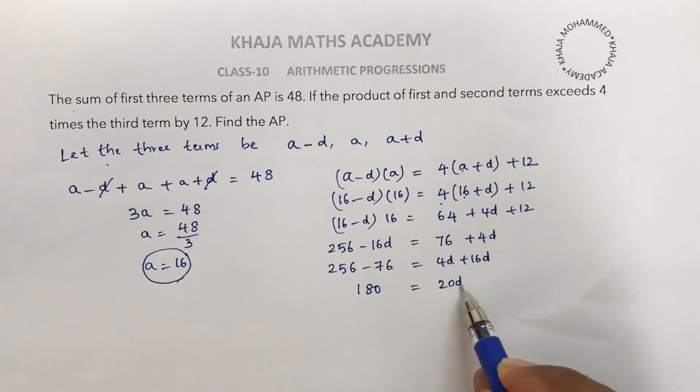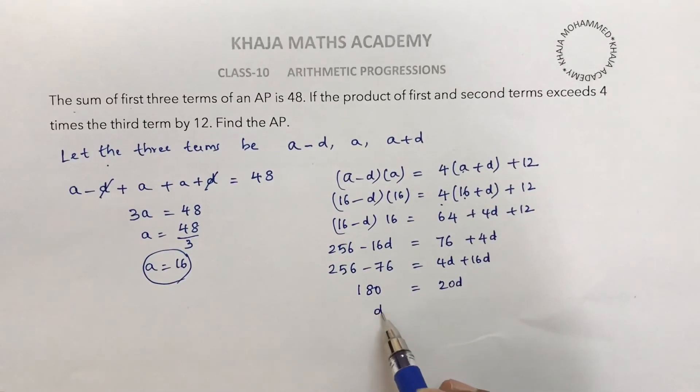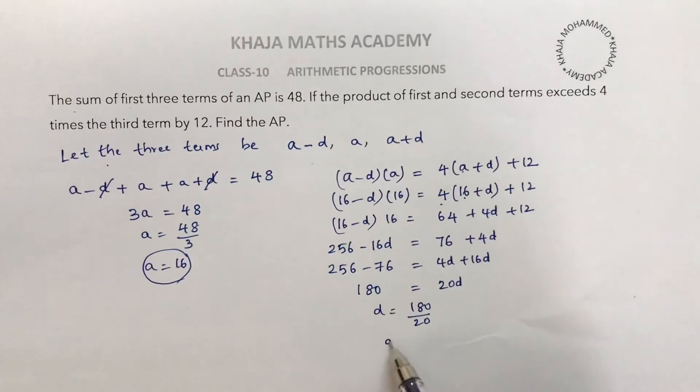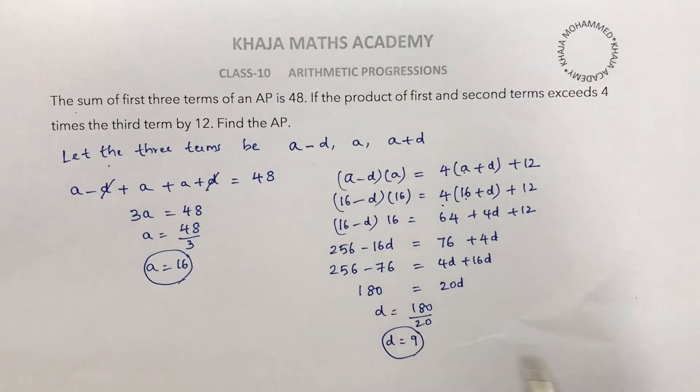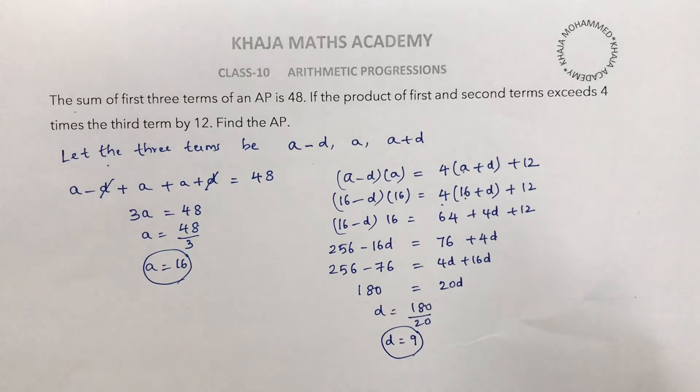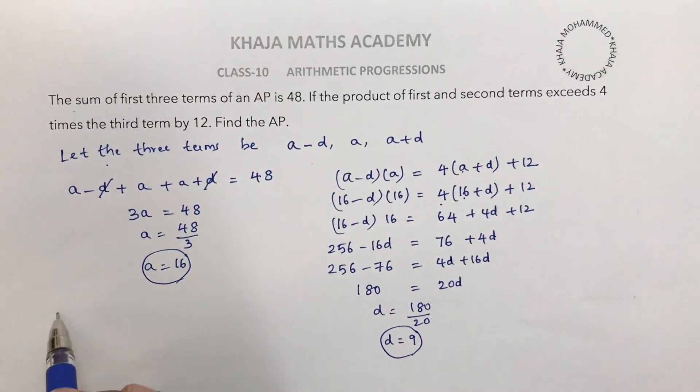Therefore d equals 180 by 20, so d equals 9. So we got the values: a equals 16 and d equals 9. We need to find the AP.